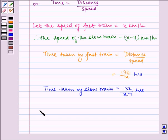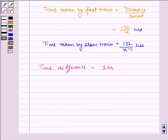Time difference is equal to 1 hour. So, 132 by x minus 11 minus 132 by x is equal to 1.